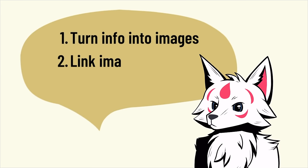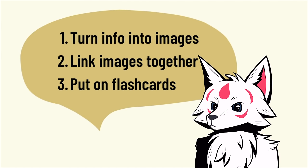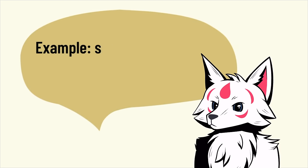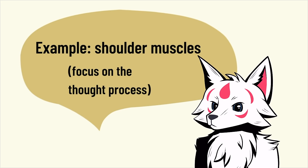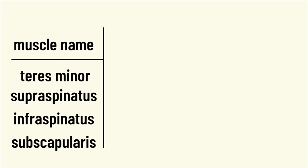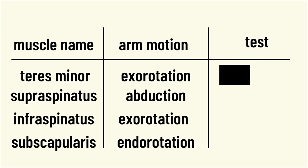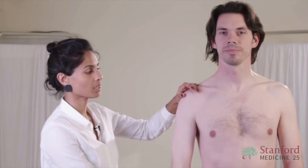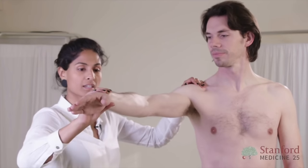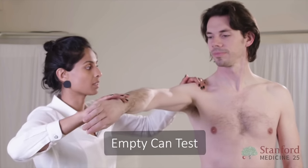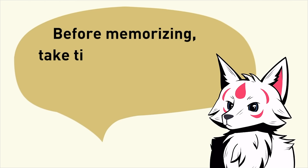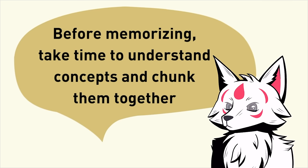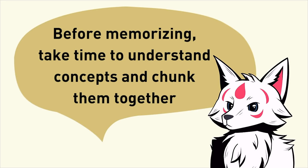Now I'm going to do a walkthrough of all the tips mentioned so far and try to memorize the shoulder muscles. I'll try not to go too deep on the medical stuff, so focus more on my thought process rather than the info itself. For this particular exam, there are four muscles — I need to know their names, how each muscle moves the arm, and what tests to perform. So if a patient comes in complaining of shoulder pain, I need to know how to maneuver the arm to figure out which muscle is injured — that's 12 different things to memorize.